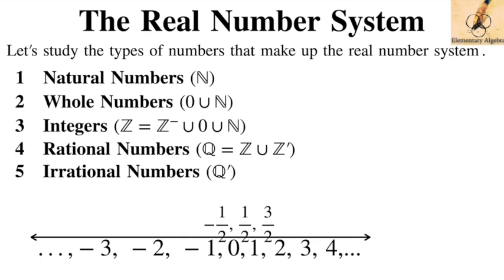Irrational numbers are the ones that fill in the holes of the number line. Along this number line, there are some holes that rational numbers cannot satisfy, and irrational numbers fill those holes. For example, Euler's number E is 2.718281828 — there's no fraction that can fill that hole in our number line. For pi, 3.1415..., there's no fractional part which satisfies it either.